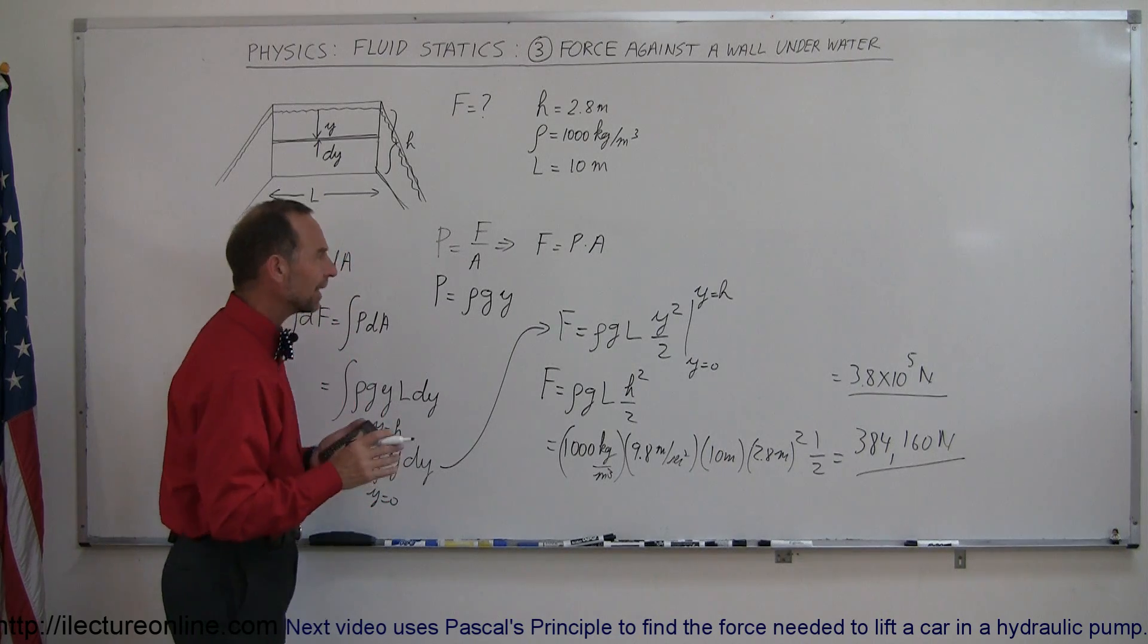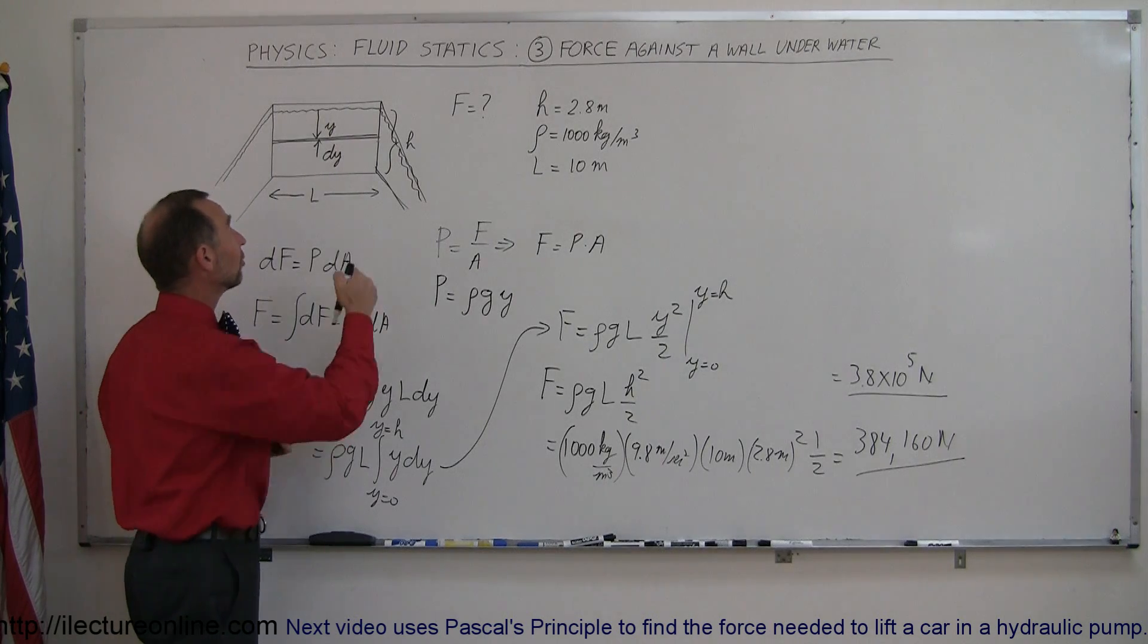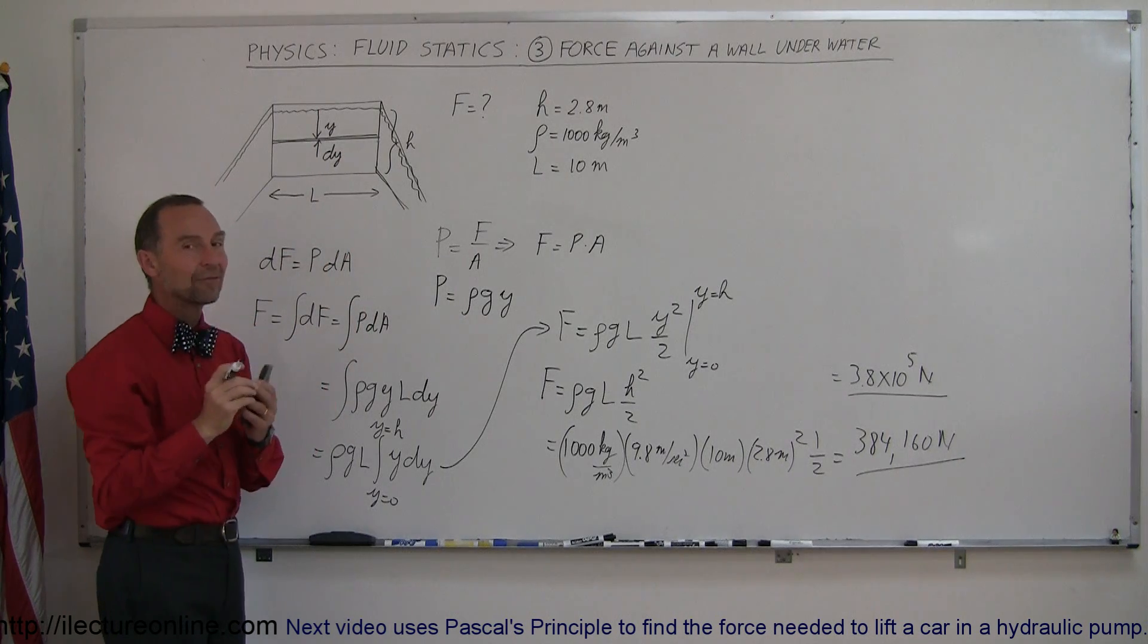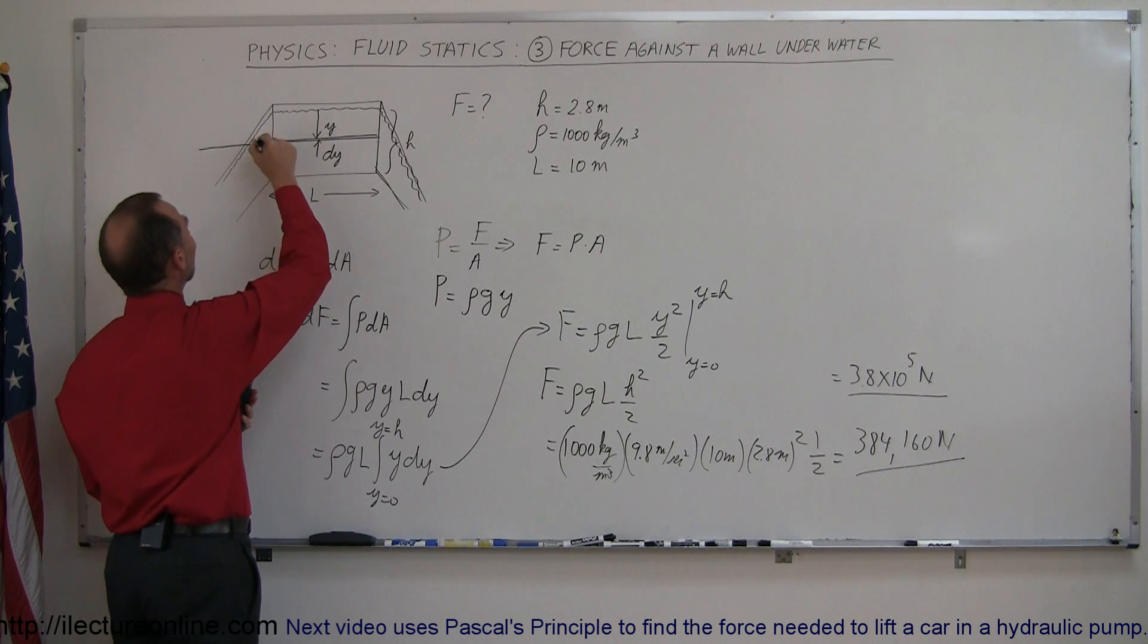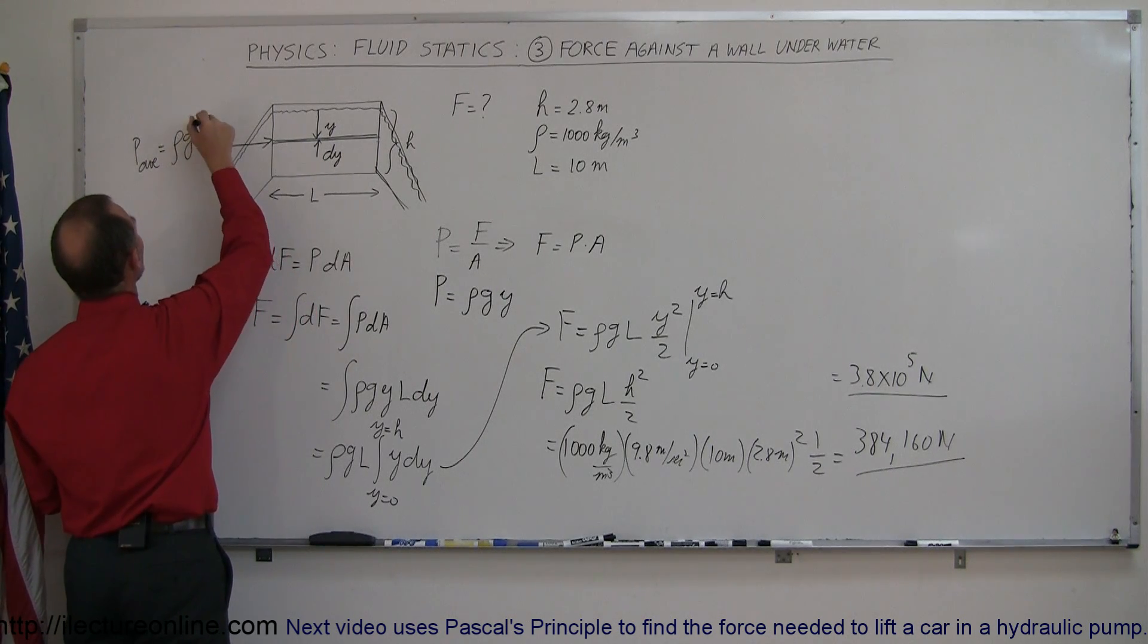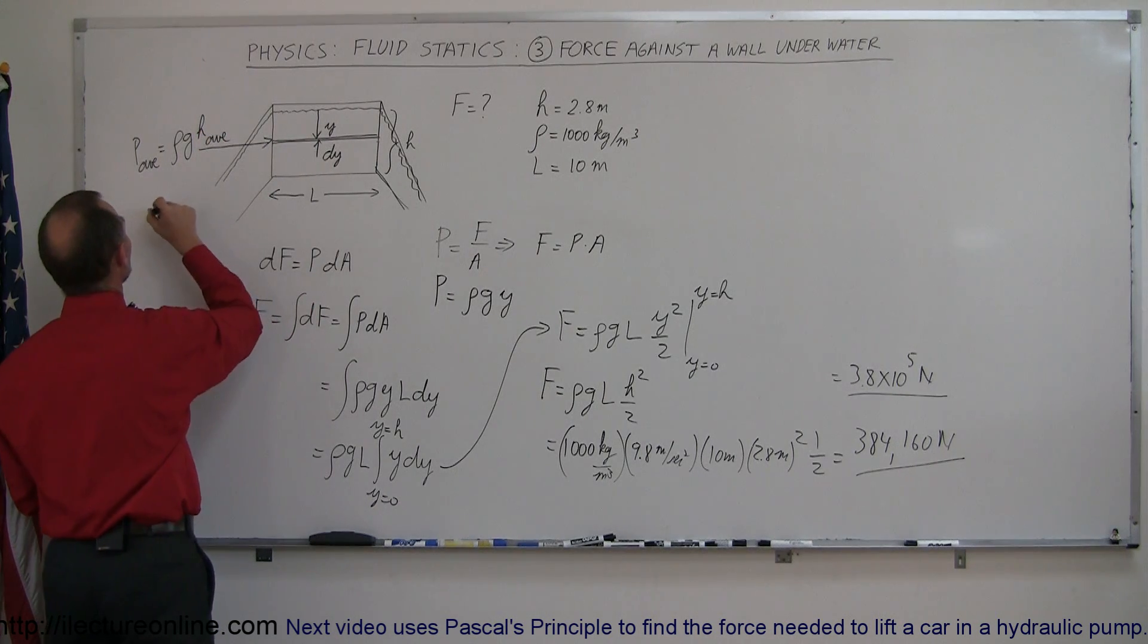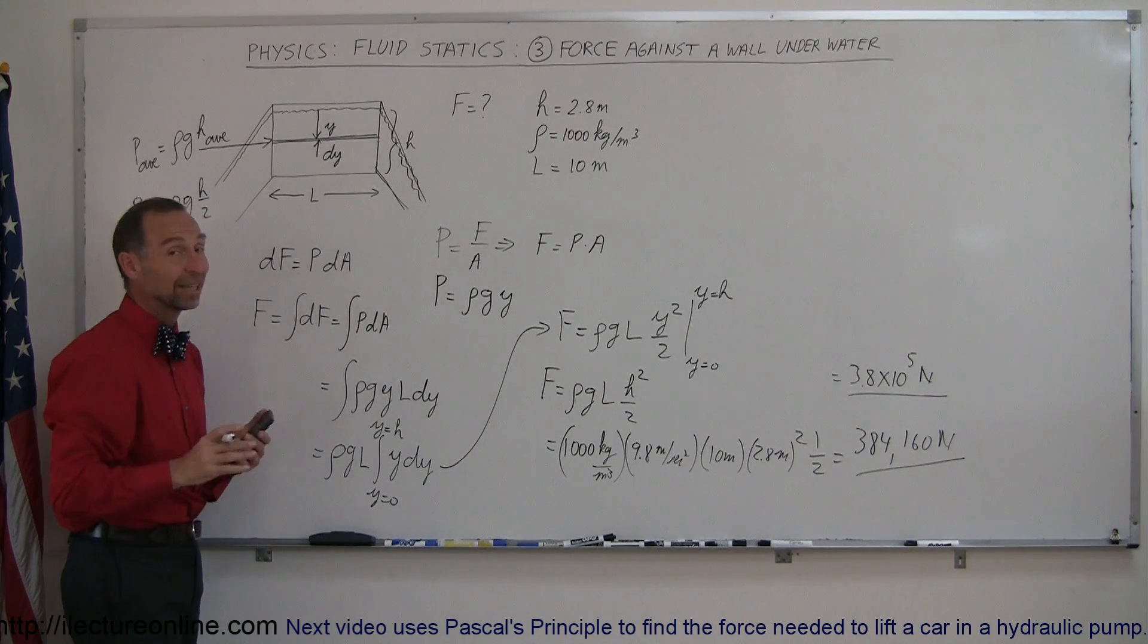Now also notice that even though we use integration to find the force against the wall, what we could also do, since the pressure changes linearly with depth, is take the average pressure, and the average pressure would occur at the halfway point. So if we take the average pressure, P average, which is equal to ρg times the average depth of the pool, we can say this is equal to ρg times h over 2. That would be the average pressure, and if we multiply that times the total area, we'll actually get the same answer.